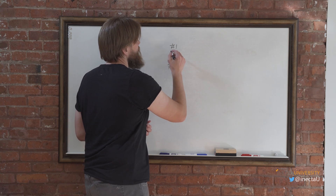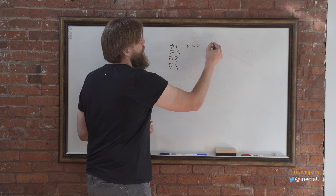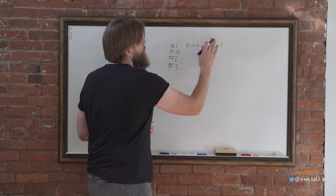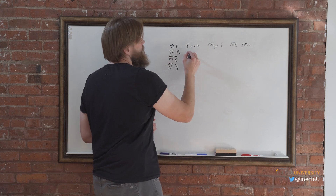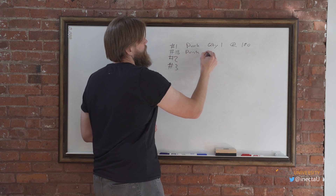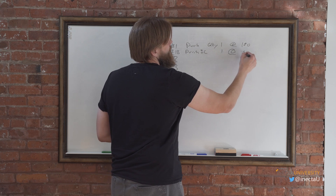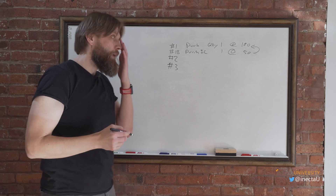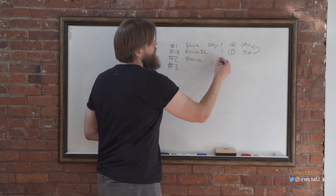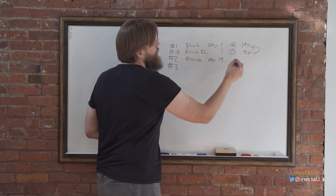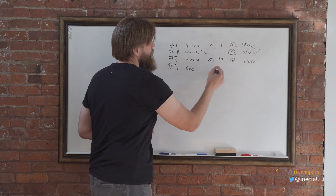So there's one B here. The first one is a purchase of quantity one for $100, and then there is an item charge — also a purchase — quantity one at $50, applied to that first transaction. Then we have a purchase of quantity 19 at $150.